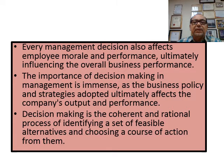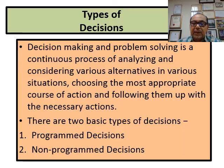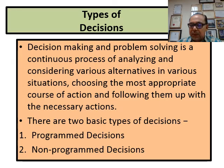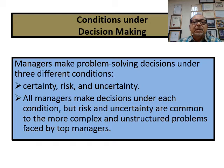Decision making is a coherent and rational process of identifying a set of feasible alternatives and choosing one. It is also a continuous process of analyzing and considering various alternatives. There are two basic types of decisions: programmed decisions and non-programmed decisions. Managers make problem-solving decisions under three different conditions: certainty, risk, and uncertainty.